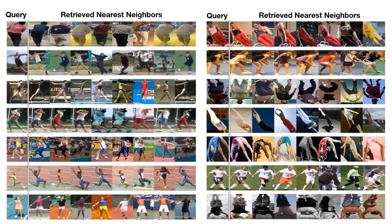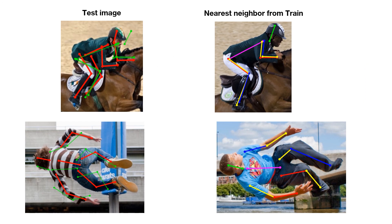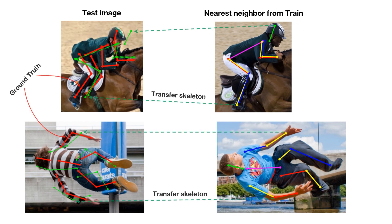Here we can see the nearest neighbors retrieved using ClickCNN features for different queries on Olympic Sports (left) and Leeds Sports (right) datasets. Results look good given that no body pose or joint annotations were used during training. We also evaluated zero-shot pose estimation: for every test image we retrieved the nearest training image and transferred its joint annotations to the query. ClickCNN was not trained to predict body joints, yet it retrieves plausible matches. One failure case involves front-back flips — the method matches a person facing away from the camera to one facing toward it, because ClickCNN is invariant to appearance as long as the shape is similar.